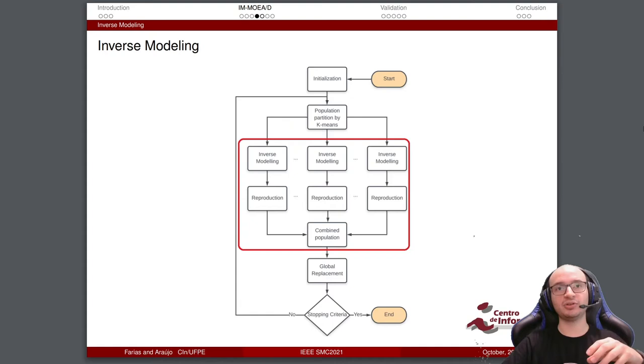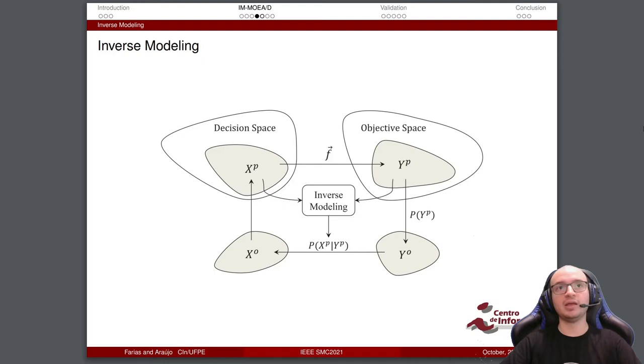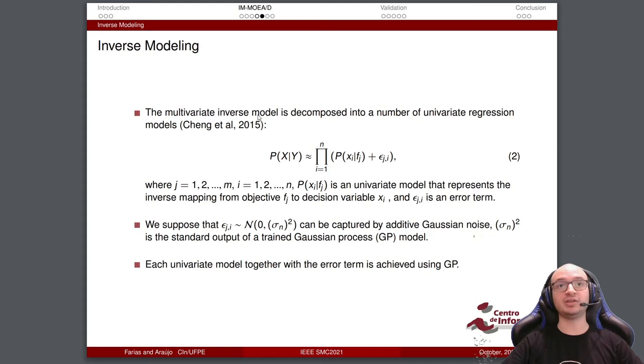The inverse models are used in the reproduction process to take the population. In the classic approach, we have the decision space and we estimate the objective space. With inverse models, we have solutions in the objective space and we apply a regression process to take the solutions in the decision space. To make that, we use this equation. The multivariate inverse model is decomposed into a number of univariate regression models, where j equals 1 to m objectives and i is 1 to n where n is the group size.